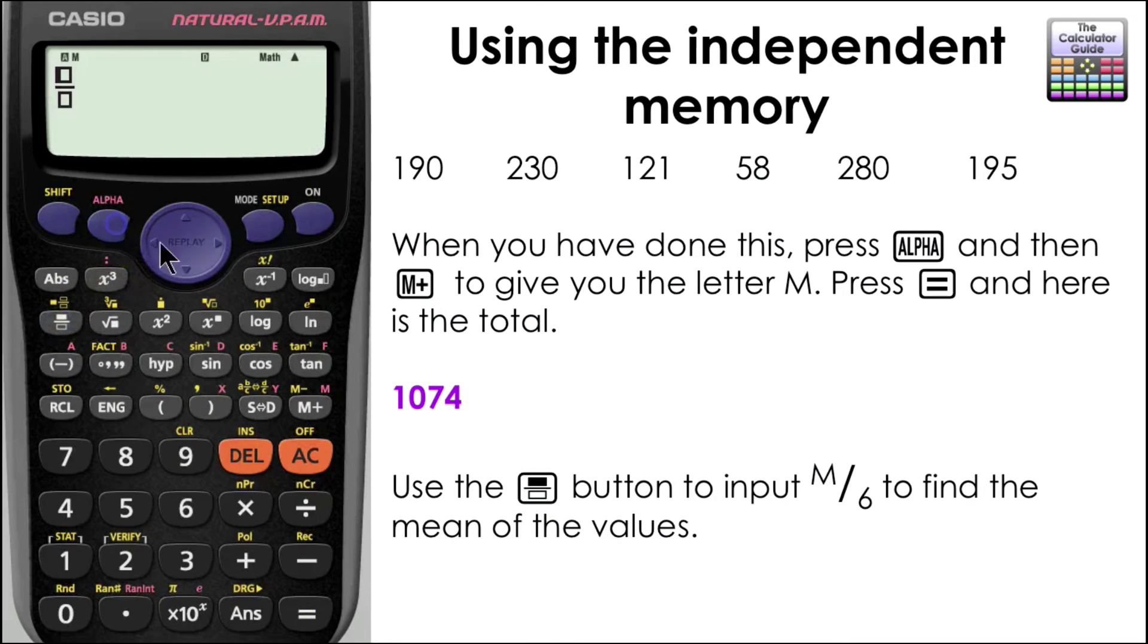If we want to calculate the mean we'll use the fraction button to input M on the top and then divide that by our six values. And here's our mean again, 179.